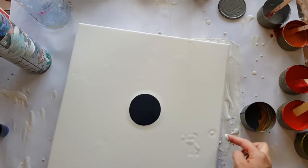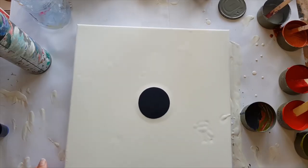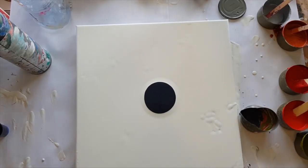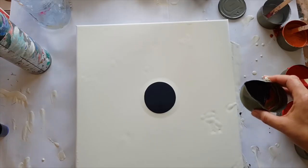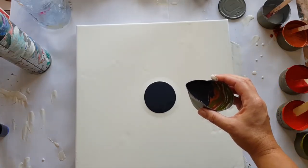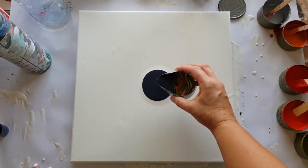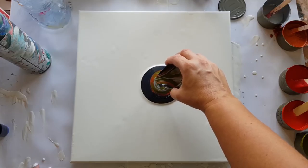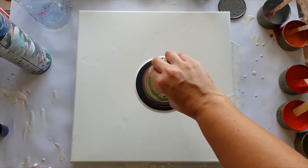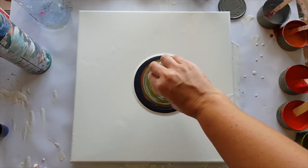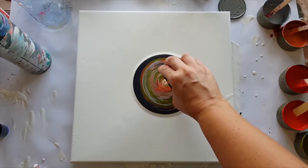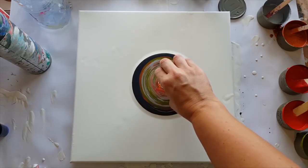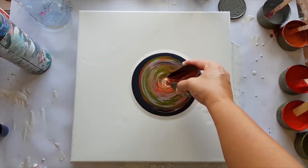Going to pour a spiral, so we're going to start in the center. Now as you can see, my paint's a lot thicker than most who do this technique.